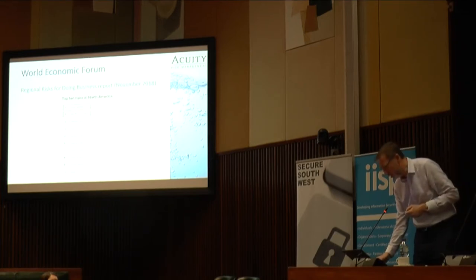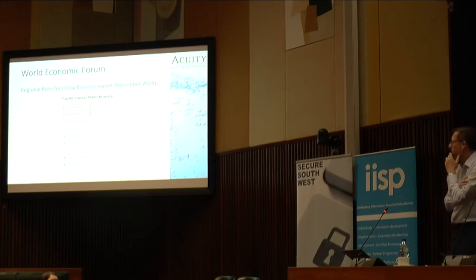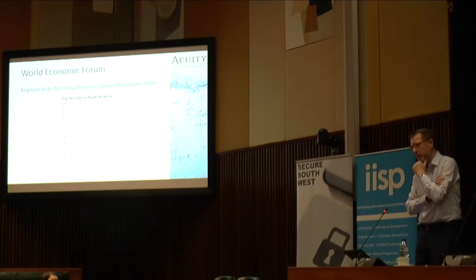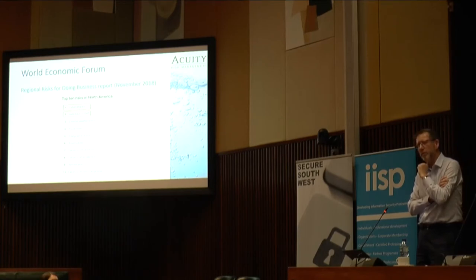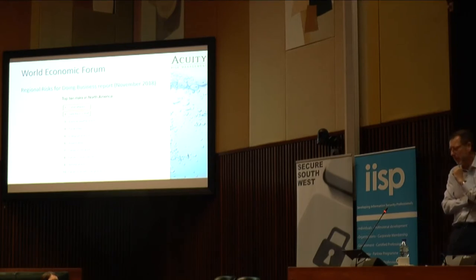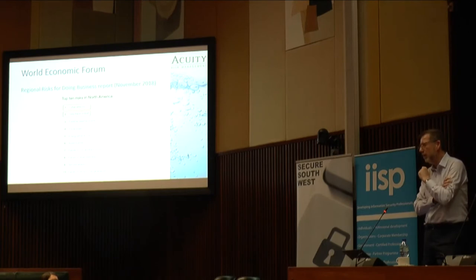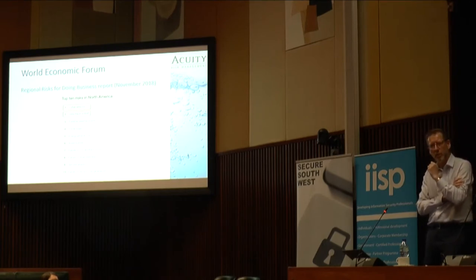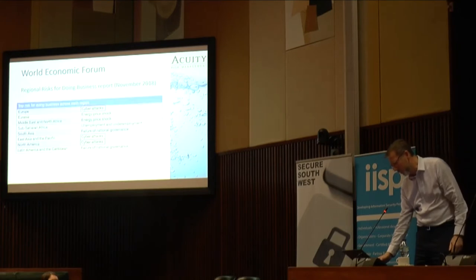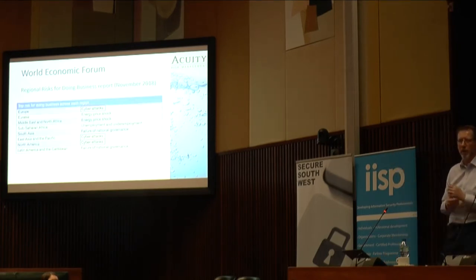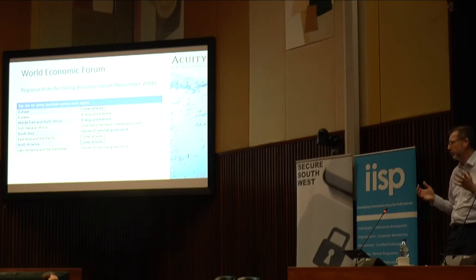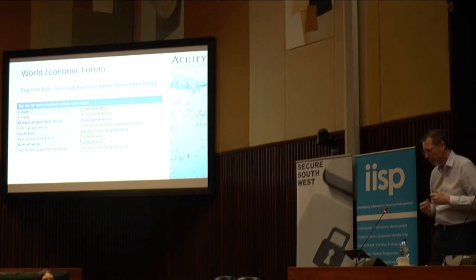I noticed this report from the World Economic Forum published in November last year about the regional risks for doing business. Cyber attacks is now the number one risk for doing business in North America, followed by data fraud or theft, and these are ahead of extreme weather events, fiscal crises, energy price shocks, and terrorist attacks. In three regions around the world, cyber attacks are the number one risk for doing business.